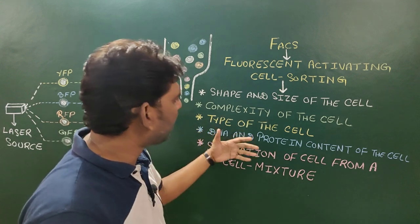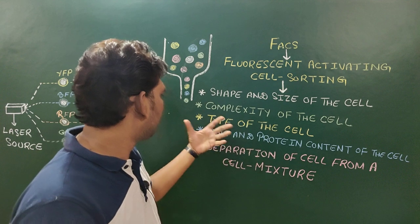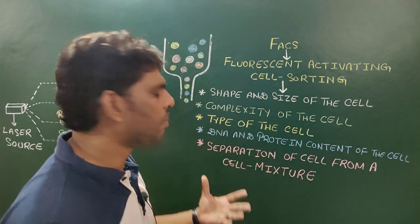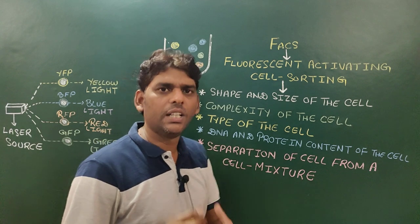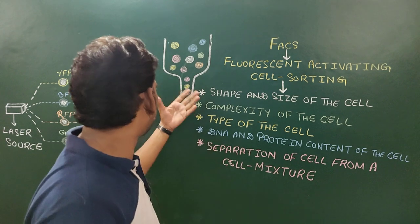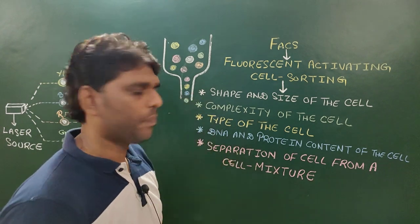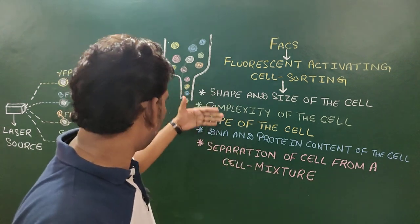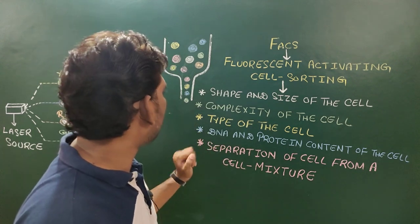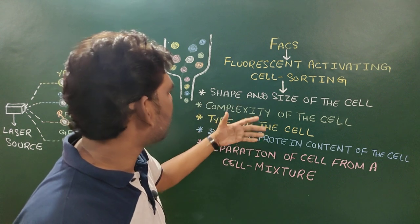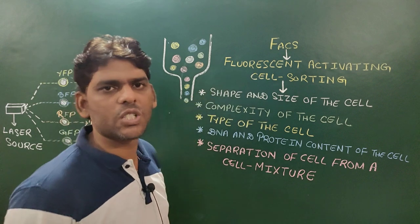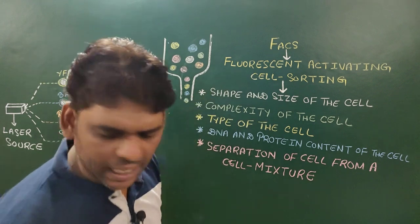The DNA and protein content of the cell also depends on the fluorescent property, whereas the separation of cells from a heterogeneous mixture is based on the charge nature of the cells or proteins. Today we will discuss each of these points, starting with how the shape, size, and complexity of the cell are determined using FACS.